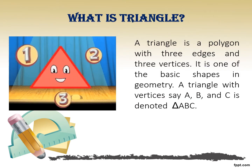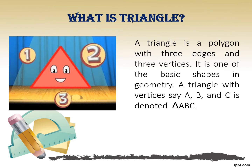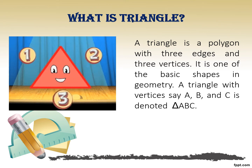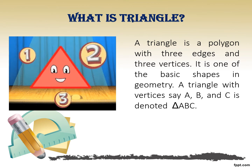Starting now with what is a triangle. A triangle is a polygon with three edges and three vertices. It is one of the basic shapes of geometry. A triangle with the vertices ABC is denoted as triangle ABC.